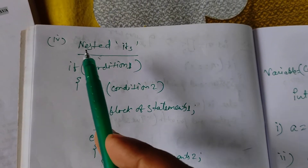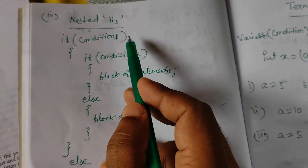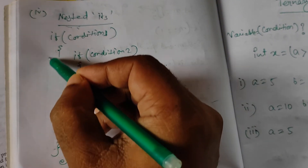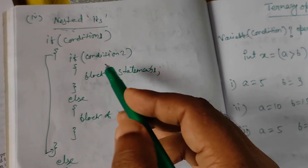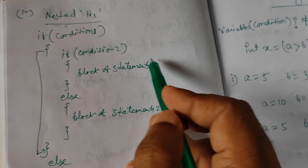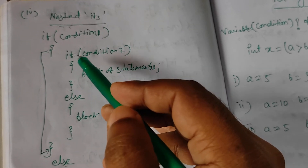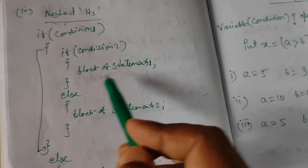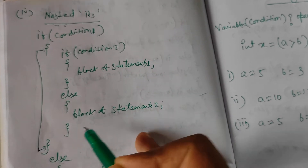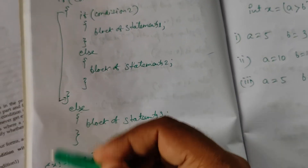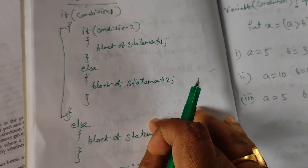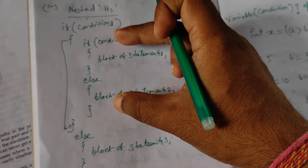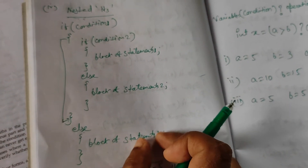Next is nested ifs. If condition 1 is true, the body of if executes. Inside that body, if condition 2 is also true, block of statement 1 executes. Otherwise block of statement 2 executes. After execution it comes out. But if condition 1 is false, it goes directly to the else part and block of statement 3 executes.